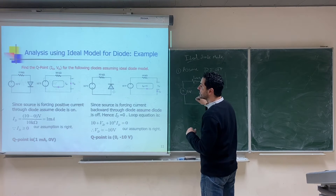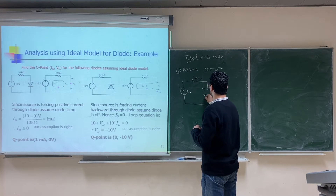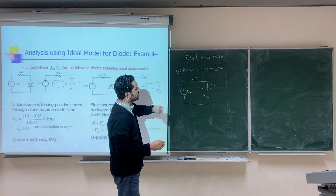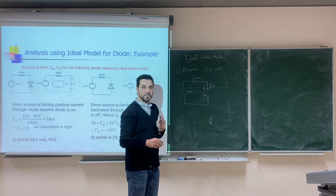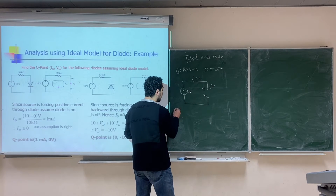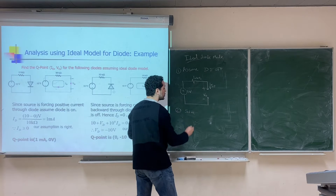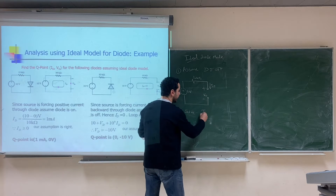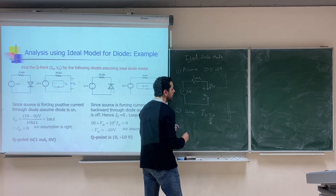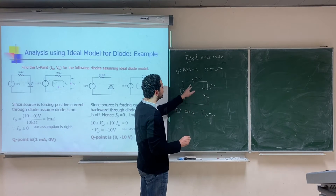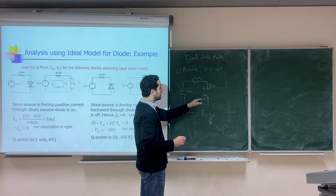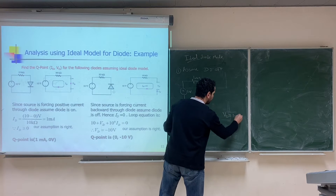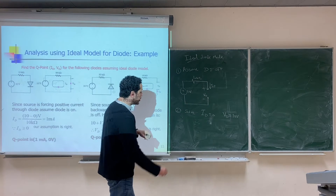The second step is Solve: solve for the voltage and current of the diode. This is a very simple circuit — with the diode as an open circuit, the diode current I_D is zero. Since there is no current, there is no voltage drop across the resistor, and the diode voltage V_D equals 10V. Now we move to the third step: Check.